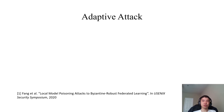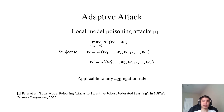When an attacker knows our FLTrust, the attacker can adapt its attack to FLTrust. We notice that local model poisoning attacks can be formulated as an optimization problem and is applicable to any aggregation rule. Therefore, an attacker can construct an adaptive attack to our FLTrust.